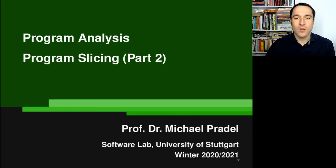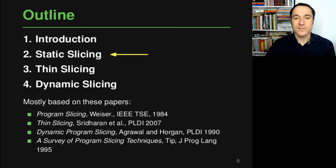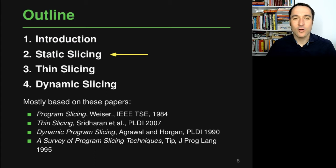Hello and welcome back to the program analysis course. This is a lecture on program slicing and we're in the second video where we look at a particular kind of slicing approach, namely static slicing. What these approaches basically do is look at the program source code and then try to compute a slice without really executing that code.